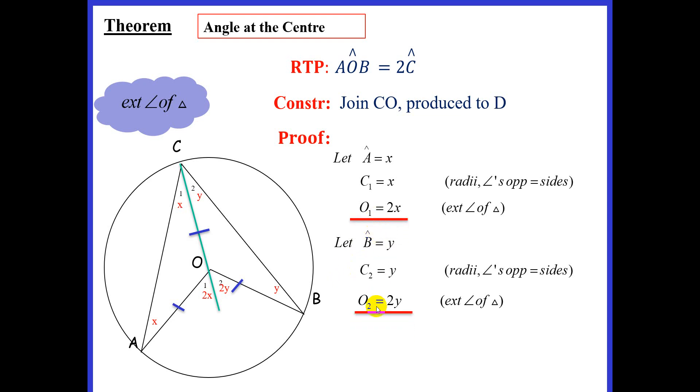Now, if we look at angle O1 and O2 and add them together, we get O1 plus O2 equals 2X plus 2Y. We can pull out a common factor of 2, and that gives us 2 times X plus Y. So O1 plus O2 equals twice X plus Y.